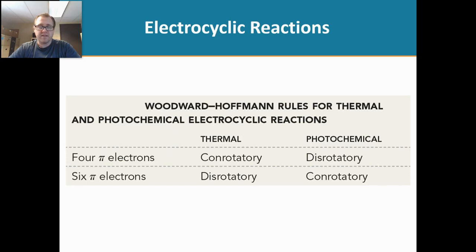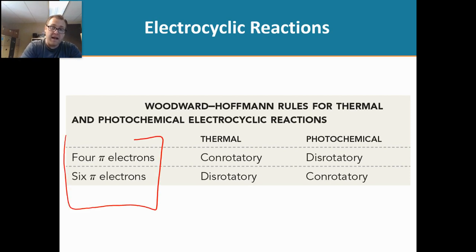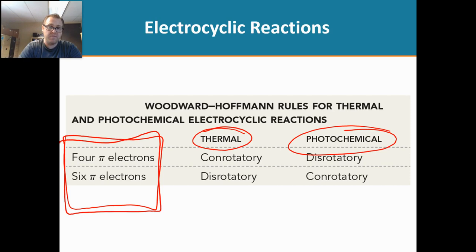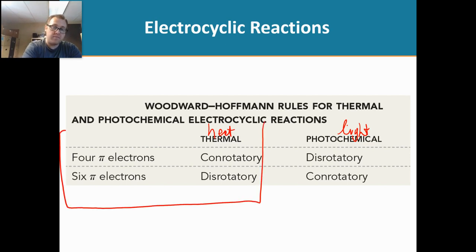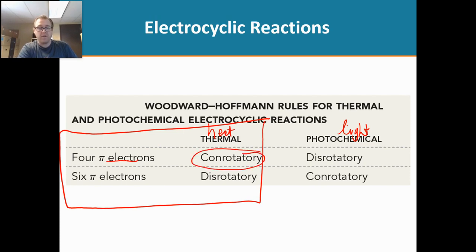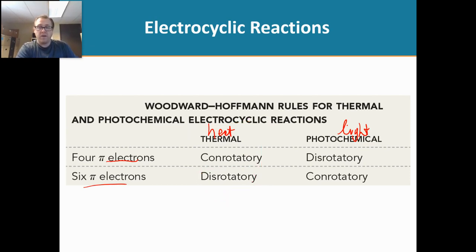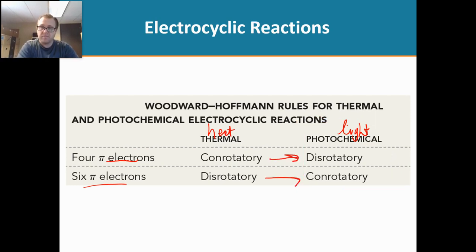This is a summary of everything we've talked about. Two things to always consider: the number of pi electrons, and whether you're using thermal energy (heat) or photochemical energy (light). With heat: four pi electrons gives conrotatory rotation; six pi electrons gives disrotatory rotation. In the next video we'll look at what happens with light — notice that the modes have switched. We want to understand why they switch, and that will be covered next.